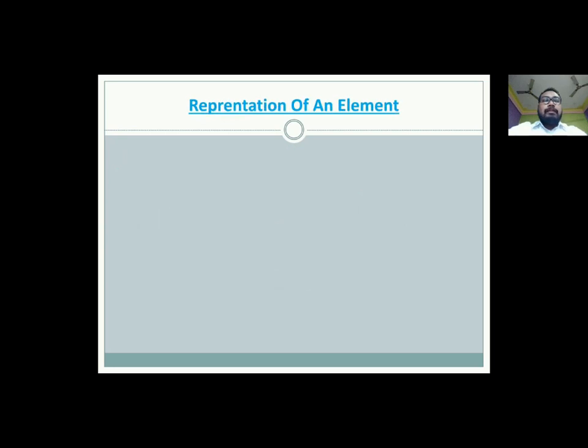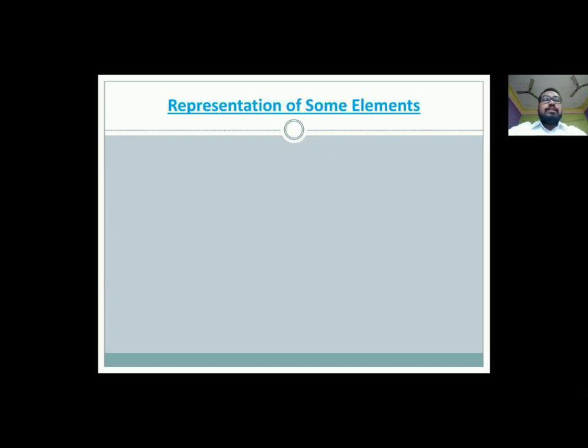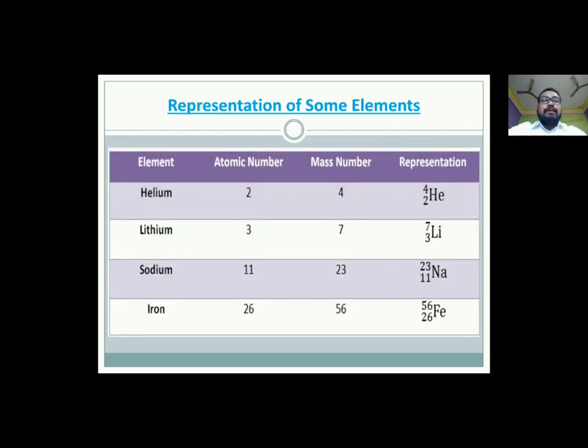Now how to represent an element? An element is represented as a symbol with the mass number as a superscript and atomic number as the subscript. See, here X is the atomic symbol, symbol of the element. And here A which is represented by mass number which is number of protons and neutrons in the atom and it is used as superscript. And then we have atomic number which is used as the subscript. Now see representation of some elements. Here is a table. We have four elements: helium, lithium, sodium and iron which atomic numbers are as follows. For helium, atomic number is 2 and mass number is 4. That's why we represent helium as like this. For the mass number as superscript and atomic number as subscript. And He is the symbol of helium element. That's how we did it for lithium, sodium and iron. Copy it in your copies.